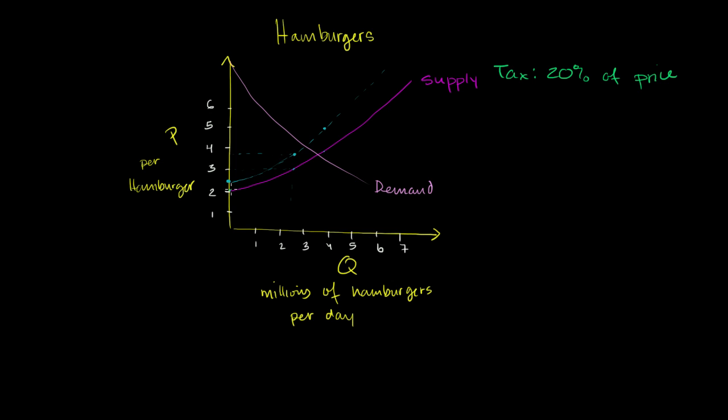So for lower values, it's going to shift a less absolute amount, because 20% of $2 is less than 20% of $3, which is less than 20% of $4. So as we have more quantity and more price, it'll shift up more and more, because 20% will then become a larger absolute amount.